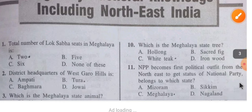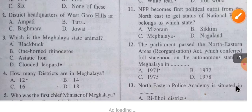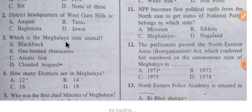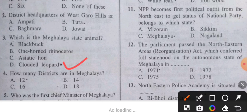Question 3: What is the Meghalaya state animal? The Meghalaya state animal is the Clouded Leopard. Question 4: How many districts are in Meghalaya? The answer is 12 districts.